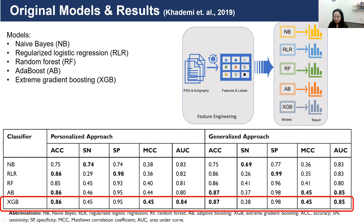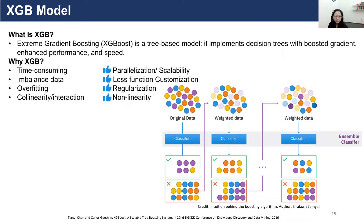The general conclusion from that paper was that comparing the five different models, XGBoost produced in general the best performance. In many machine learning applications, extreme gradient boosting outperforms other methods because it works well with imbalanced data, avoids overfitting, handles collinearity and interactions, and is less time consuming and more efficient.